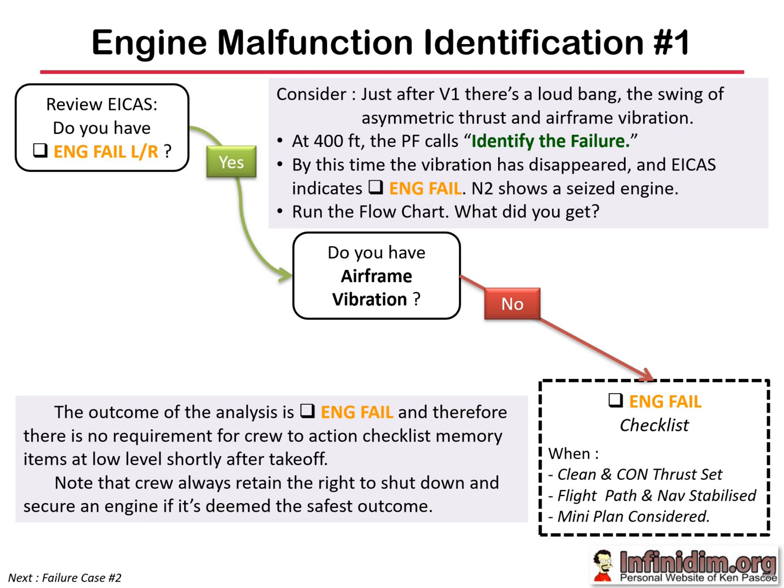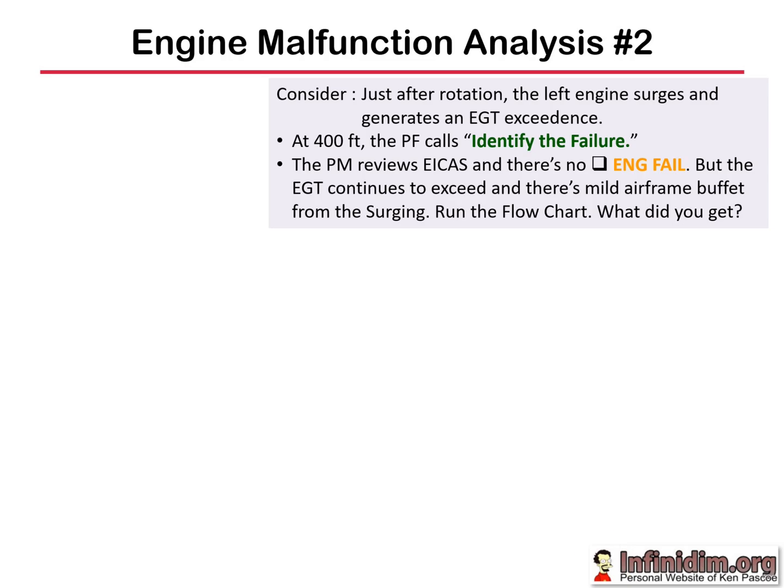Once again, even in this scenario the crew always retains the right to shut down and secure the engine if that's deemed the safest outcome. Scenario 2: just after rotation, the left engine surges and generates an EGT exceedance. At 400 feet the pilot flying calls 'identify the failure.' The PM reviews the ICAS - no engine fail - but the EGT continues to exceed and there's some mild airframe buffet from the surging. Run the flowchart - what do you get?